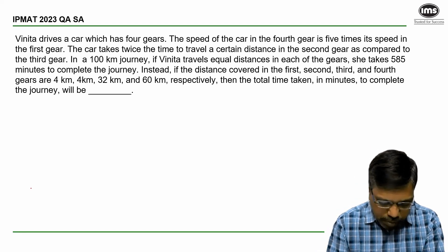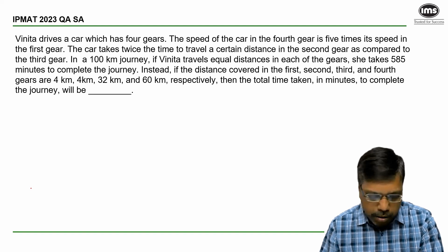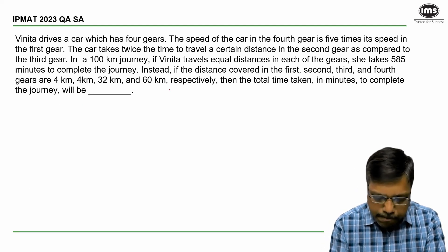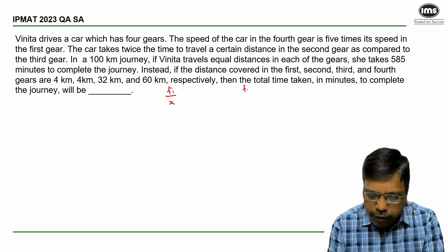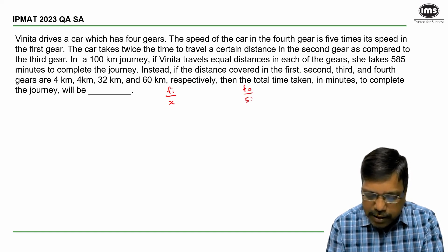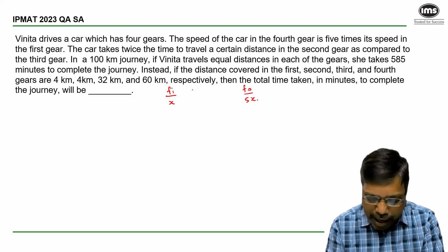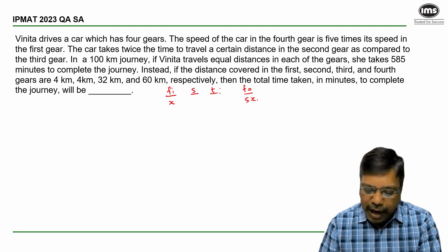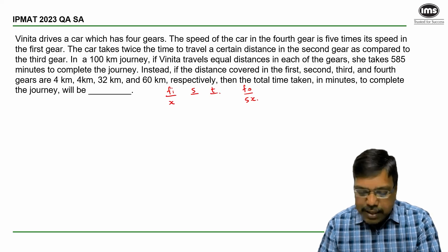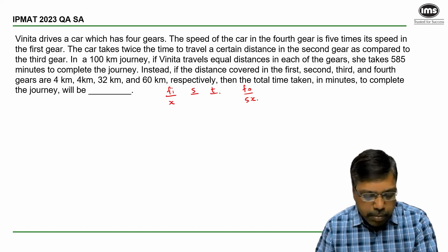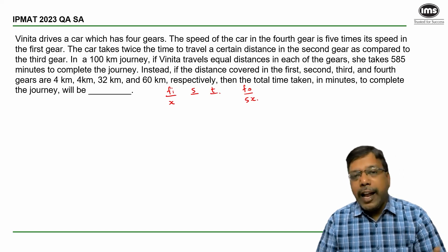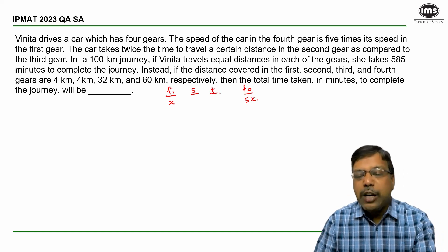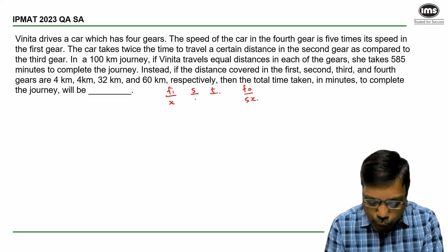Now if I assume the speed of the first gear to be x, then the speed of the fourth gear is 5x. At the same time, the time taken to travel in the second gear is twice that taken to travel by the third gear. So if the time taken is in the ratio 2:1, it means the speeds are in the ratio 1:2.